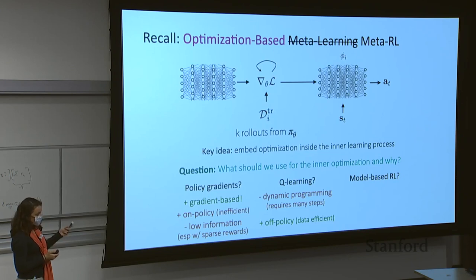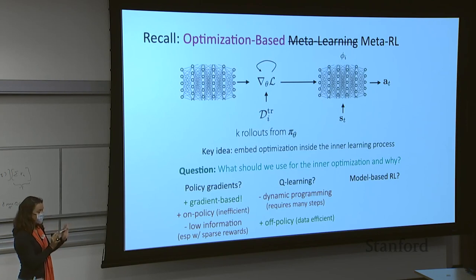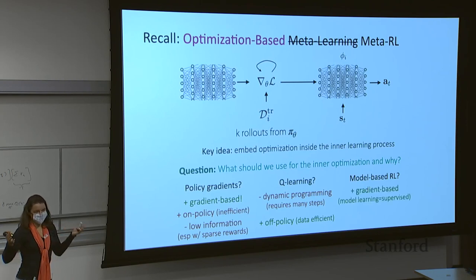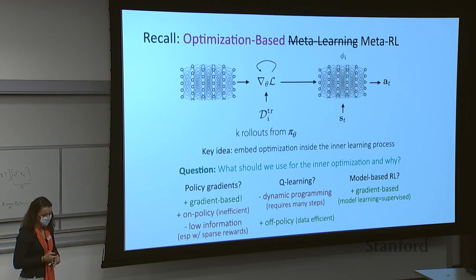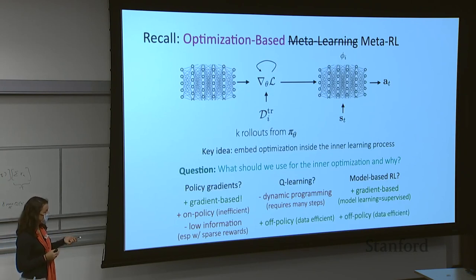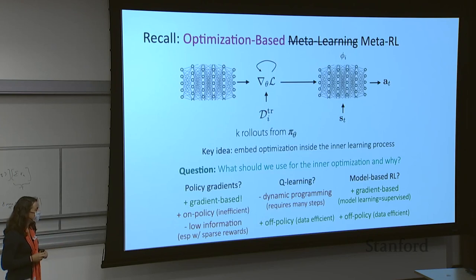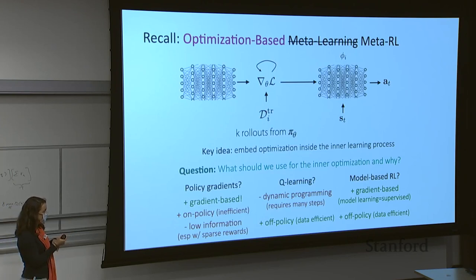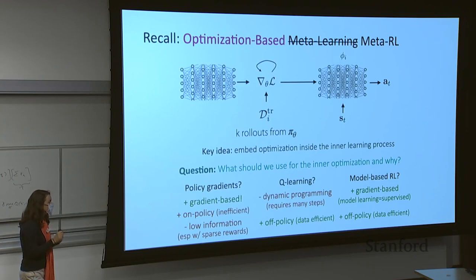For model-based RL in the inner loop: learning a model is a supervised learning problem, so updates are clearly gradient-based. It can also be done off-policy, making it data efficient. This makes the most sense when there's a local update and when dynamics vary across tasks. It addresses some of the shortcomings of both policy gradients and Q-learning.